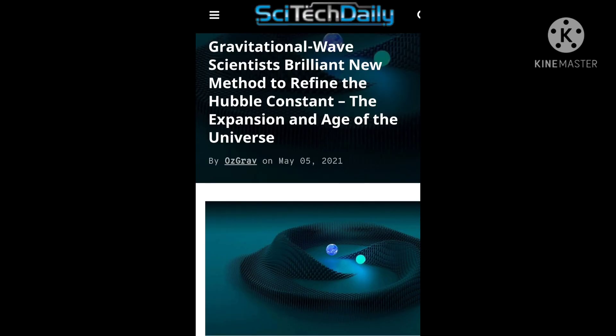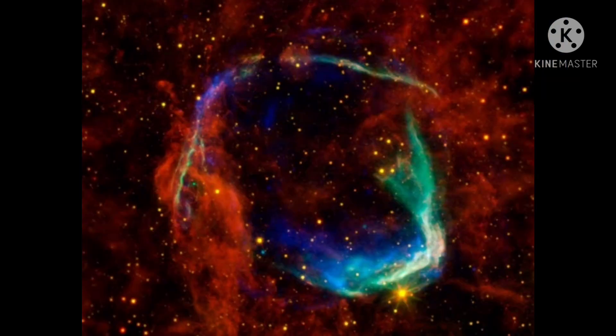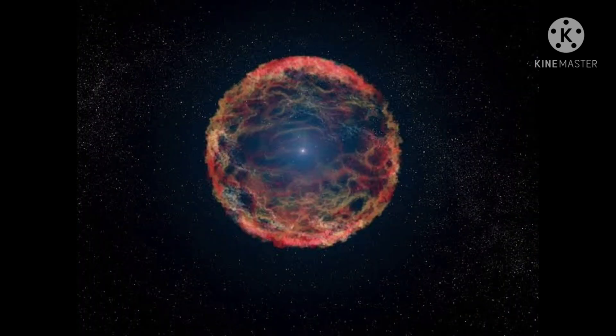In August 2002, LIGO began its search for cosmic gravitational waves. Measurable emissions of gravitational waves are expected from binary systems: the collision and coalescence of neutron stars or black holes; supernova explosions of massive stars which form neutron stars and black holes; accelerating neutron stars; the rotation of neutron stars with deformed crust; and the remnants of gravitational radiation created by the birth of the universe.